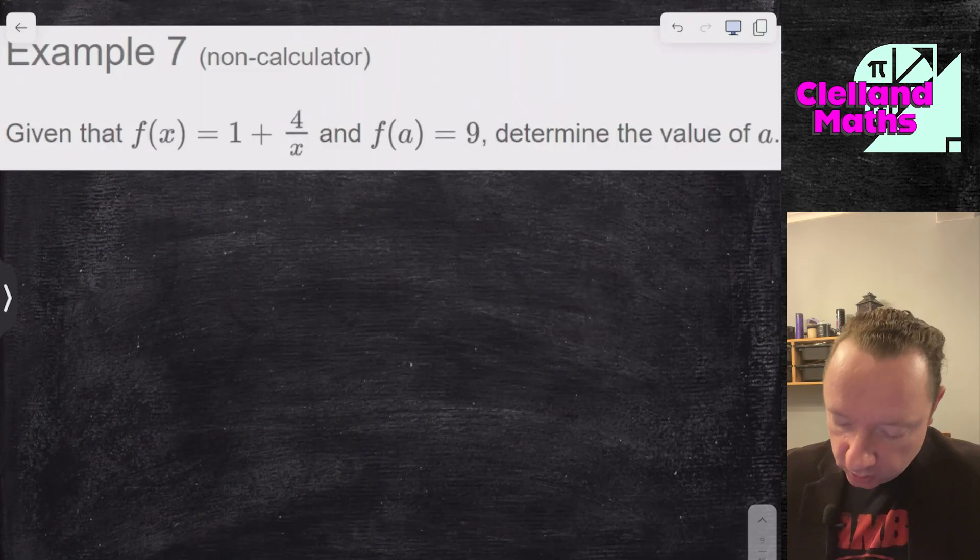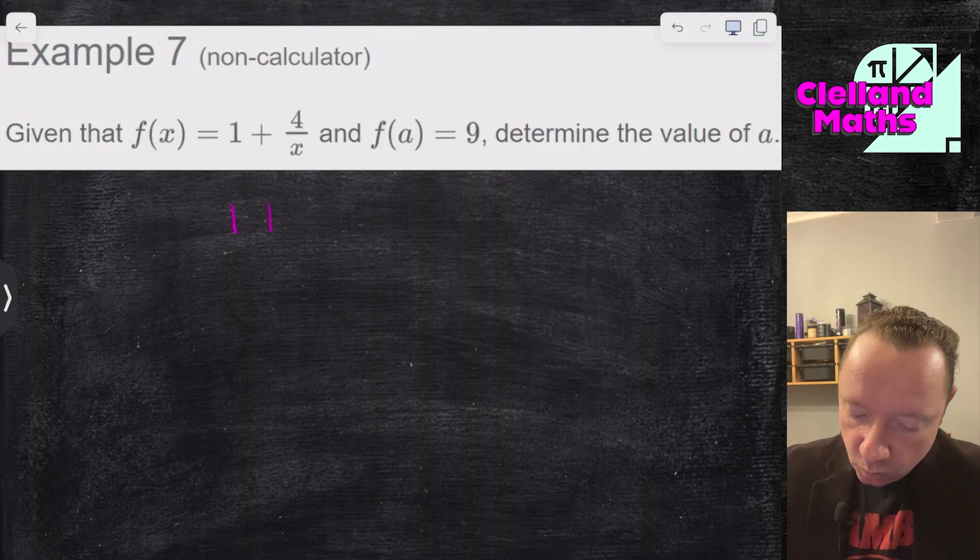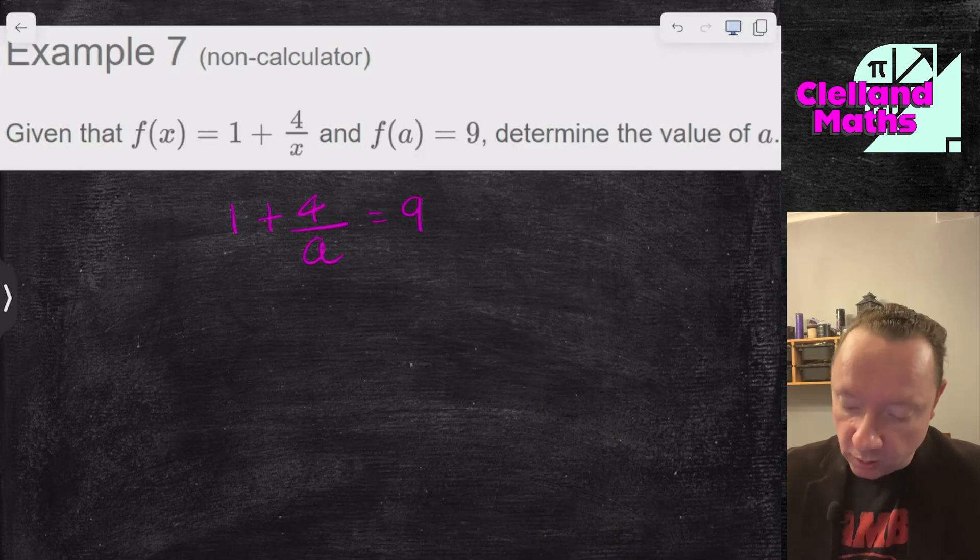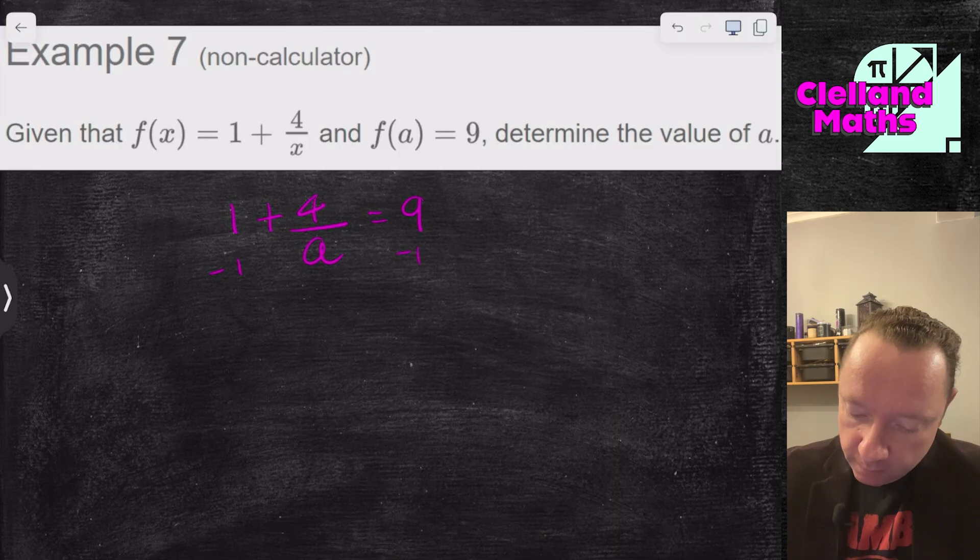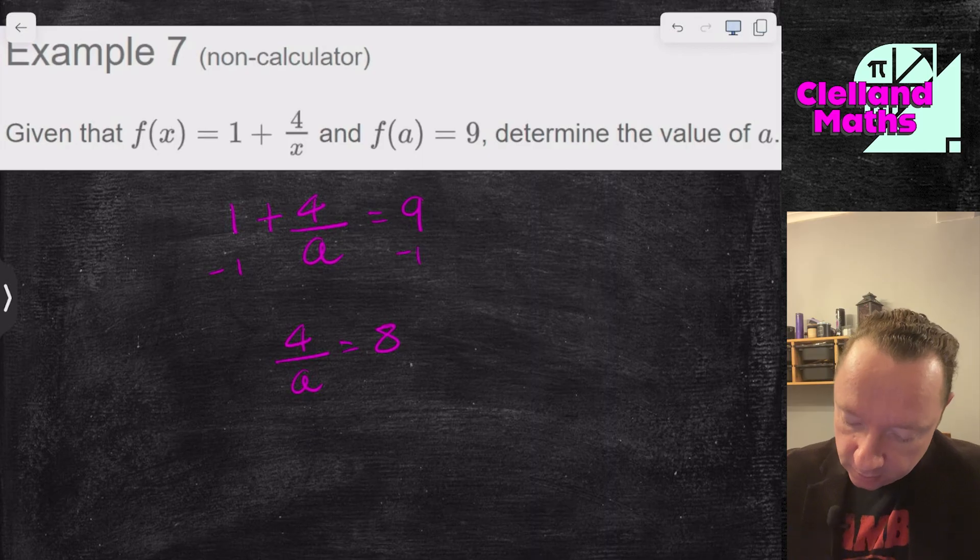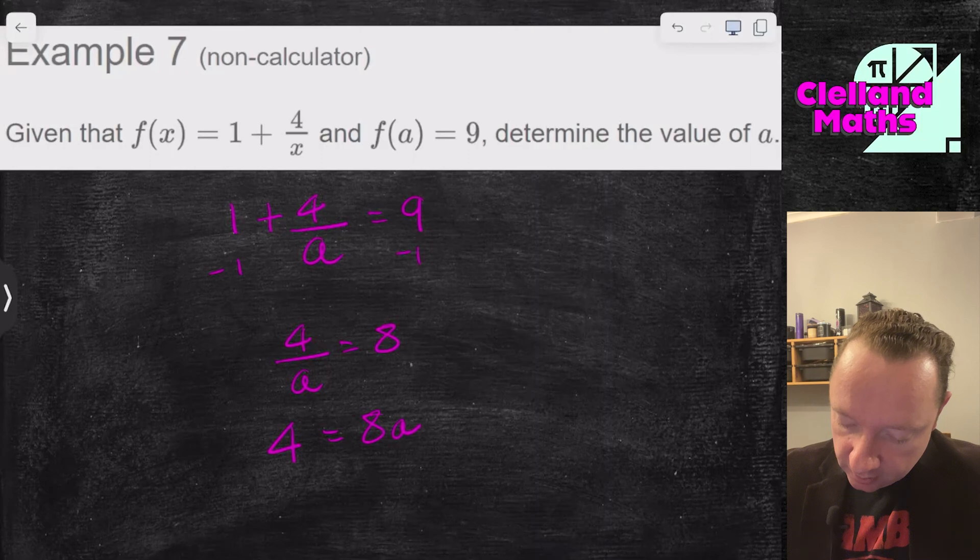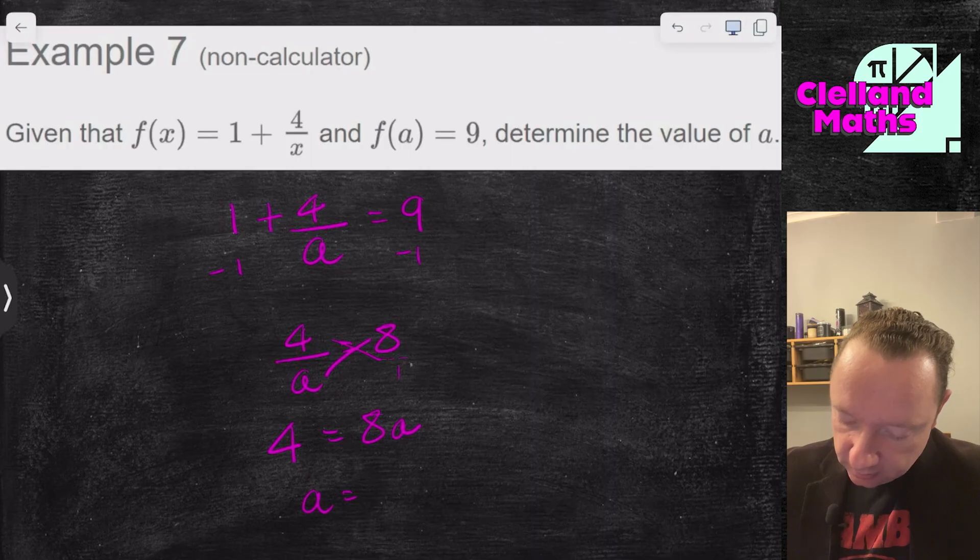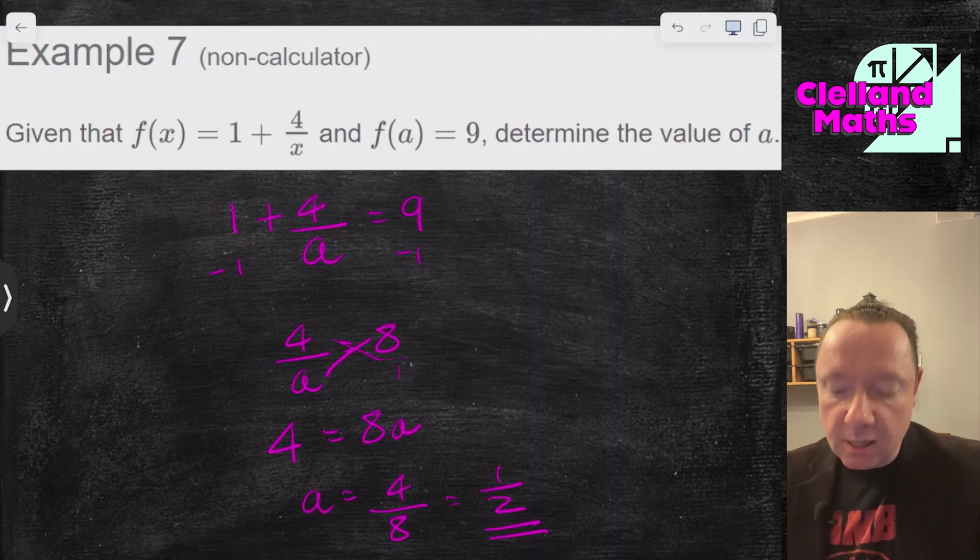Next example. f of x equals 1 plus 4 over x. f of a equals 9. So 1 plus 4 over a equals 9. So we end up with an algebraic equation to solve. First step, I'll isolate the fraction with a in it. So take away 1. I get 4 over a equals 8. You can times both sides by a. So if you times this side by a, you get 4. And the other side by a, you get 8a. Now a is 4 over 8, which simplifies to 1 half. And there we are.